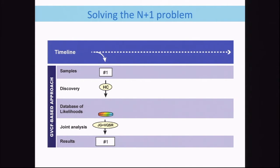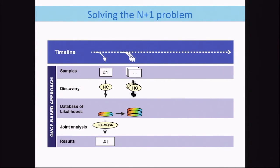We run each sample through Haplotype Caller and store the likelihoods. Rather than just hard variant calls, we store the likelihood that each site was homozygous reference, homozygous alt, or heterozygous. For each site we store these likelihoods, and we can do some optimizations — for instance, lots of contiguous homozygous ref sites can be stored as blocks with compression. Once we do this for many samples, each time storing these likelihoods, we then take these likelihoods and have a database or some representation of them, and then we do the calling.